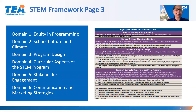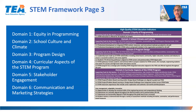The final page of the Texas STEM framework is the high-quality indicators of STEM programming. The indicators are arranged in six domains: equity and programming, school culture and climate, program design, curricular aspects of a STEM program, stakeholder engagement, and communication and marketing strategies. High-quality indicators should be present in all STEM programs. The model identification guide provides examples of how each of the high-quality indicators can align to the models within the STEM model progression, and that will be covered in more detail during instructional series video 2.